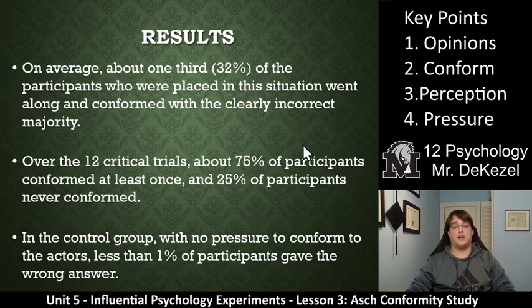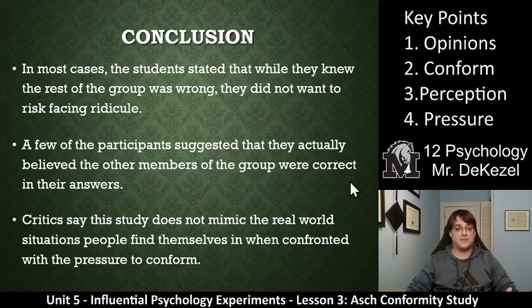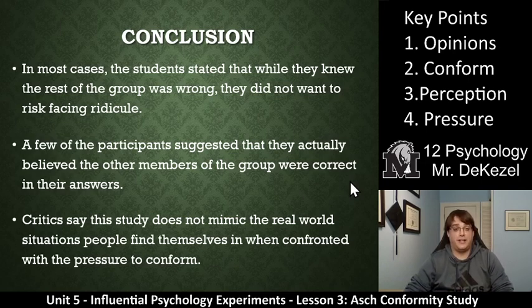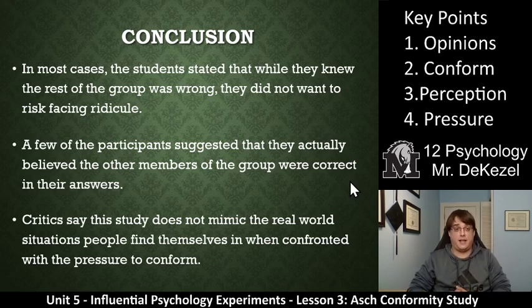So essentially, it was very obvious what the correct answer was all the time, but about 75% of people answered incorrectly at least once when they were pressured to. That's key point four: pressure. So in conclusion, in most cases the students stated that while they knew the rest of the group was wrong, they didn't want to risk facing ridicule and being the only one who was wrong — even though they would have truly been the only one that was right. A few of the participants suggested that they actually believed the other members of the group were correct in their answers — because so many people said that was the answer, they must all be right. They can't all be wrong and I be the right one.